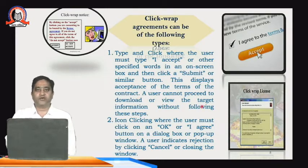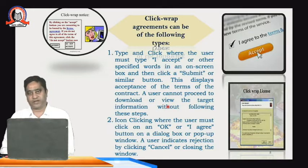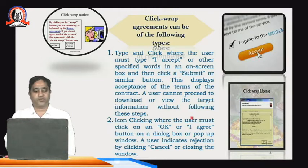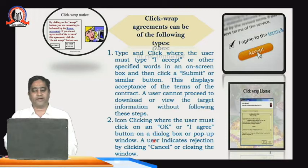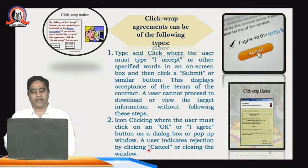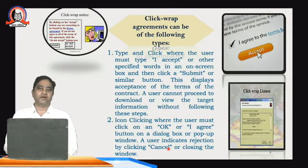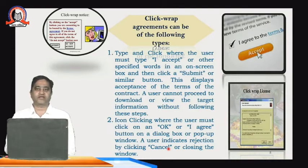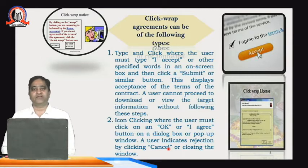The user cannot proceed to download or view the target information without following the required steps. In icon clicking, the user must click 'OK' or 'I Agree' on a dialog box or pop-up window. A user indicates rejection by clicking 'Cancel' or closing the window. So there are two choices available to the user: accept or leave it — if he leaves, he clicks the 'Cancel' button.